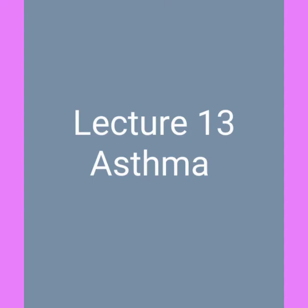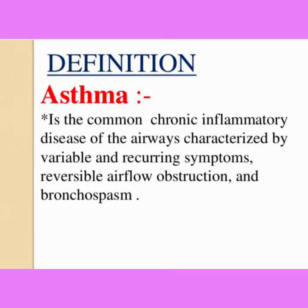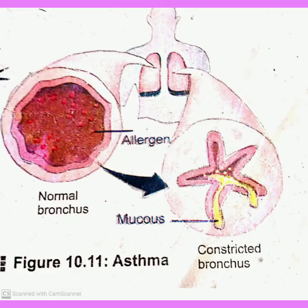Asthma is a form of allergy. Basically, it is inflammation of the bronchi, which results in more mucus production. When more mucus is produced, it causes the narrowing of airways — the air passageway becomes narrow. So asthma is a form of allergy in which there is inflammation of the bronchi, more mucus production, and narrowing of airways.